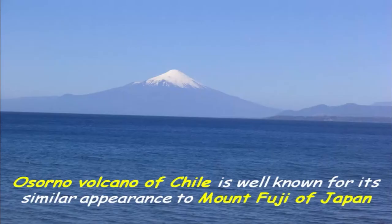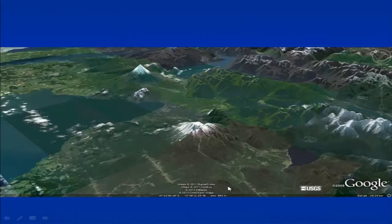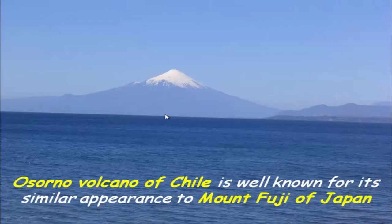These are the active volcanoes. This is the same example of the active volcano named as the Osorno volcano of Chile. This portion you are able to see is the Osorno volcano in Chile, and it resembles or has a similar appearance to Mount Fuji of Japan.